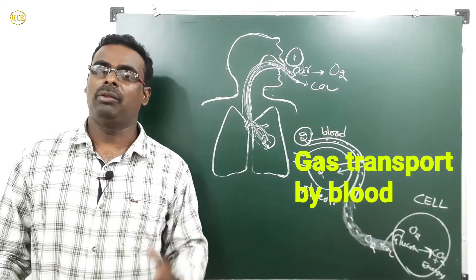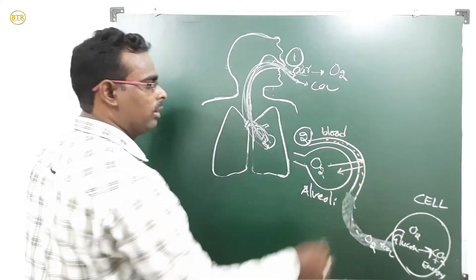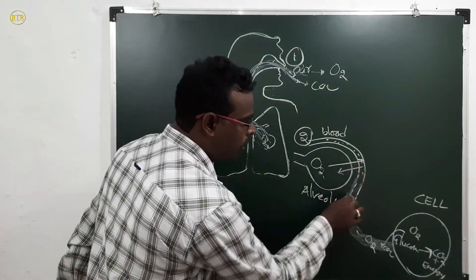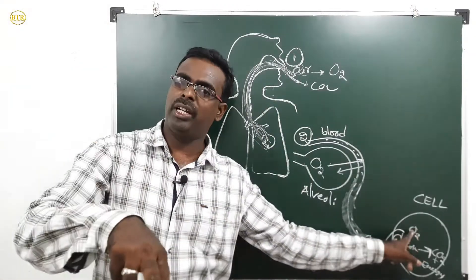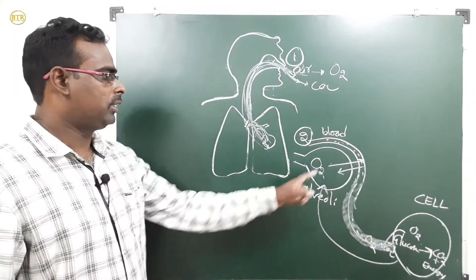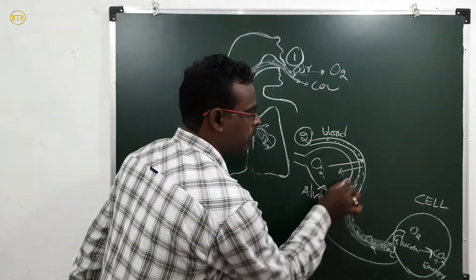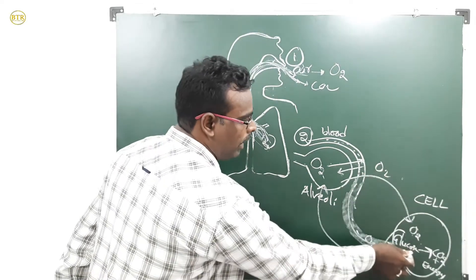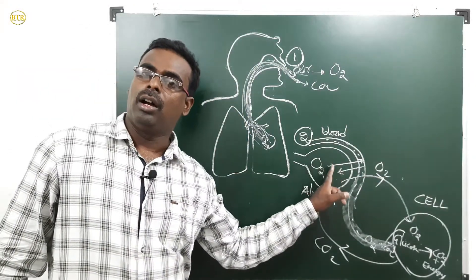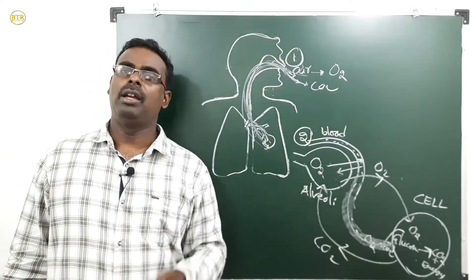The third step is gas transport by blood. Oxygen gas enters into the blood in the second step. In the third step, the blood transports this oxygen from the alveoli to the cell. The cell utilizes the oxygen and produces carbon dioxide. This carbon dioxide then moves from the cell back to the alveoli via the blood. That is the third step — gas transport by blood.